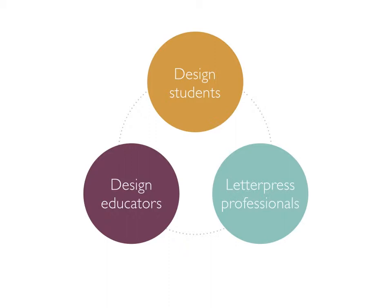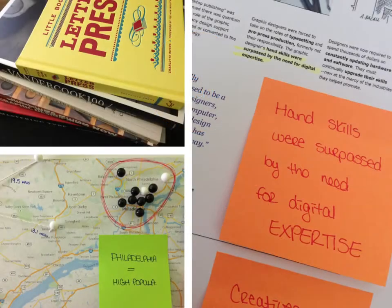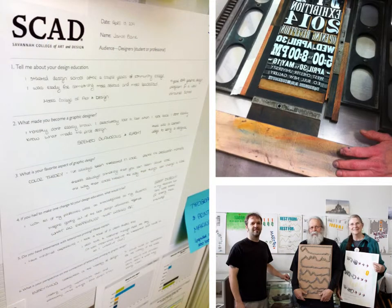By conducting both primary and secondary research, a baseline understanding of the current and desired experiences can be established for each group. Secondary research focused on understanding the landscape of the current state of design education and letterpress printing, helping to build a strong foundation of knowledge and identify the target audience. Observations, online surveys, and interviews were conducted amongst all three groups, reaching over 30 participants.